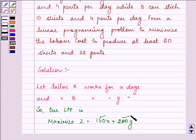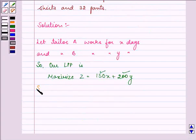Now here we have some constraints. So constraints are 6X plus 10Y should be greater than or equal to 60. That is 6 shirts which is stitched by Taylor A and 10 shirts which are stitched by Taylor B should be greater than or equal to 60.